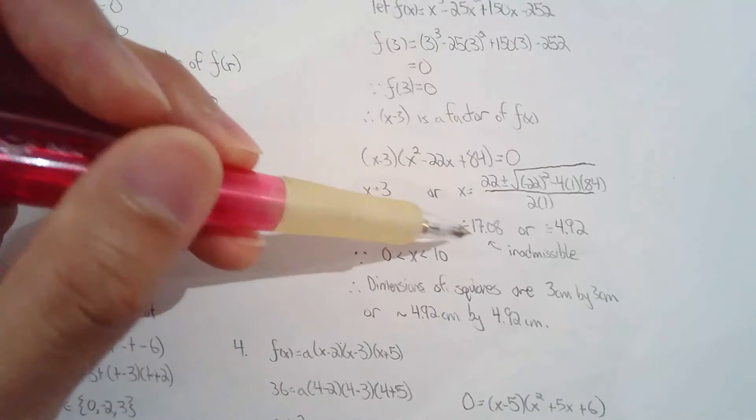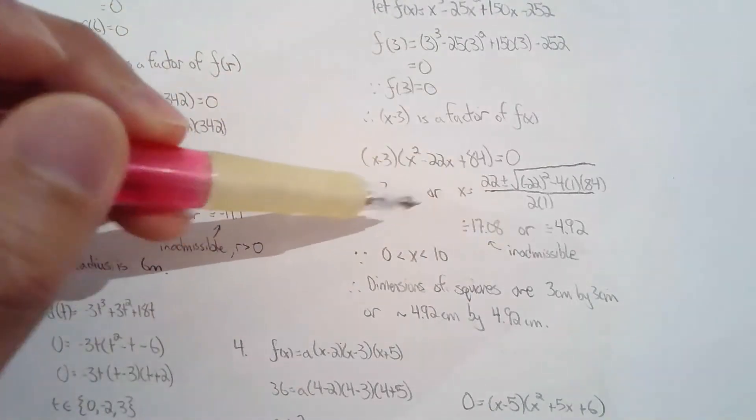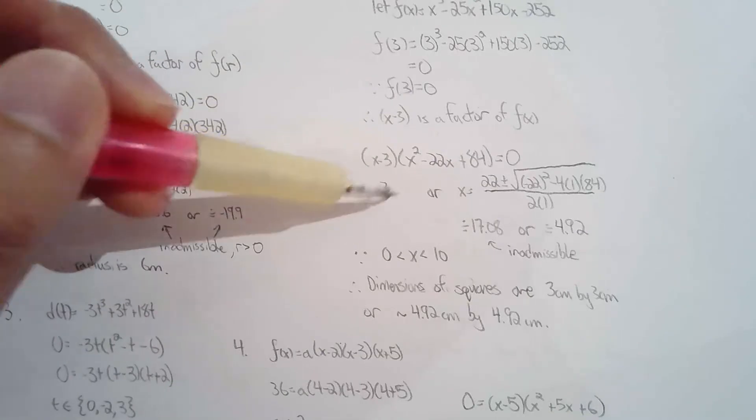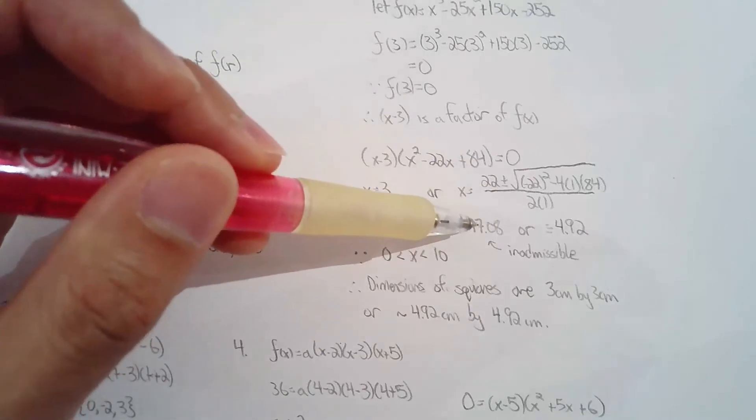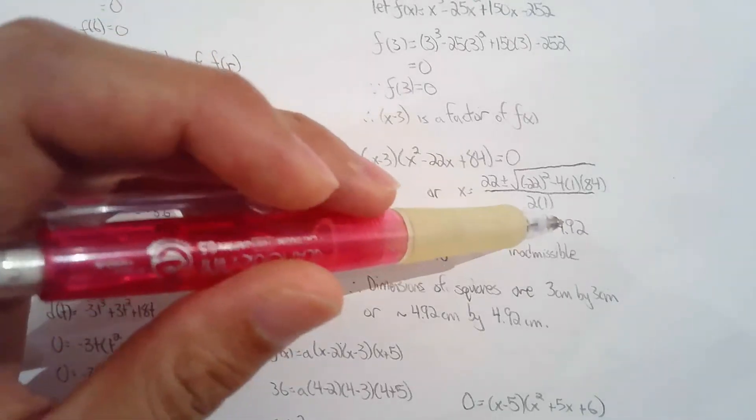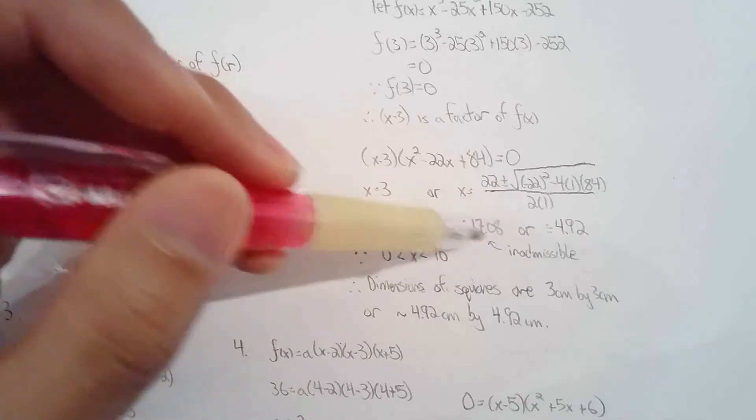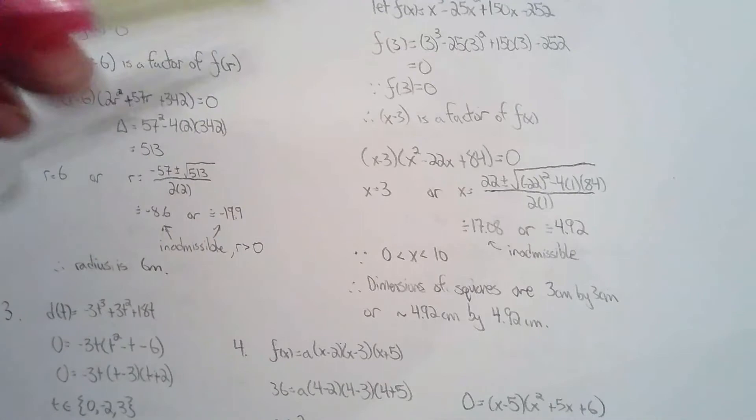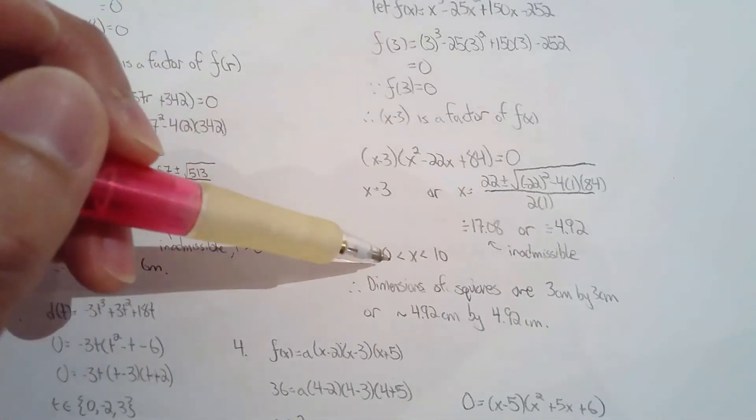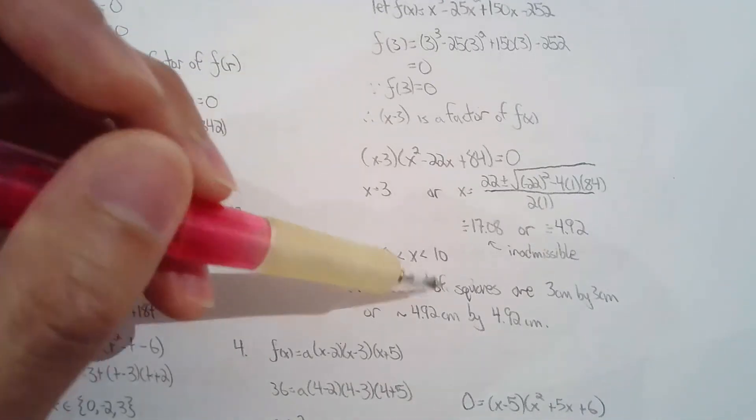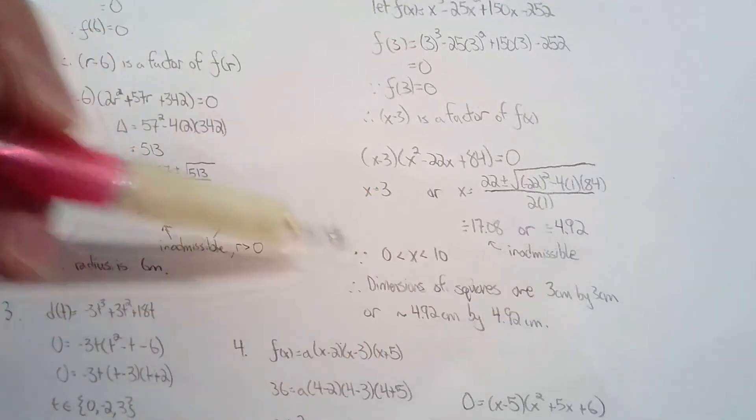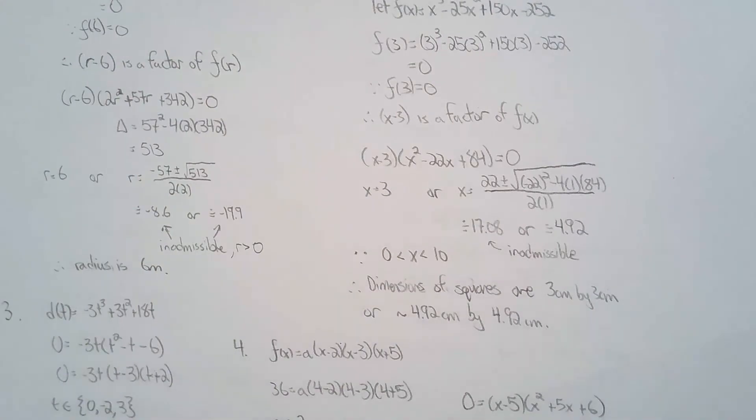I found the solution. So I got 3, 17.808, and 14.92. So this 17.8, I have to reject this because X, if you look at the cardboard sheet, it has to be from 0 to 10. So the squares that you cut out from the corners could either be 3 centimeters by 3 centimeters or approximately 4.92 centimeters by 4.92 centimeters.